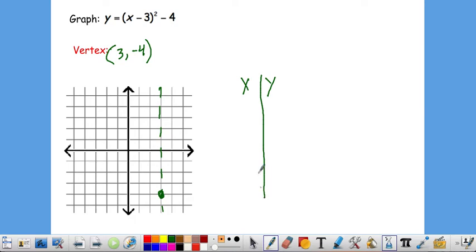Then if we're making a table, my middle value in the table would be that 3, negative 4 point. I'll plug in some points to the left. I'll plug in some points to the right. I'll go ahead and just plug in 4. 4 minus 3 is 1. 1 squared is 1. 1 minus 4 is negative 3. So negative 2 would also be negative 3 when we reflect that.